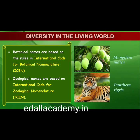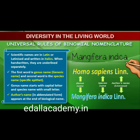In order to facilitate the study, scientists have established procedures to assign a scientific name to each known organism, acceptable to biologists all over the world. For plants, scientific names are based on agreed principles and criteria provided in the International Code for Botanical Nomenclature (ICBN). Animal taxonomists have evolved the International Code of Zoological Nomenclature (ICZN). The scientific names ensure that each organism has only one name, and that such a name has not been used for any other known organism. Biologists follow universally accepted principles to provide scientific names to known organisms.